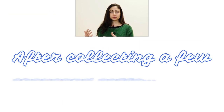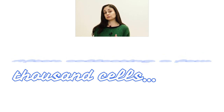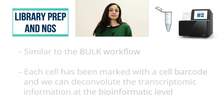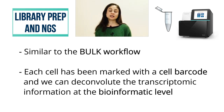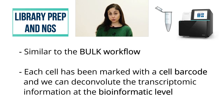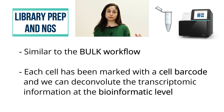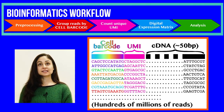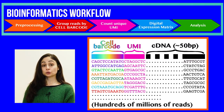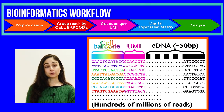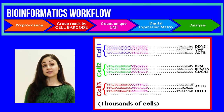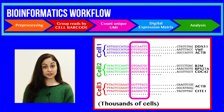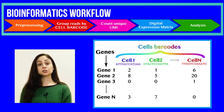After collecting the desired number of cells, we start with the proper library preparation workflow, which is very similar to standard bulk processing, because each cell has been marked at the beginning with a cell barcode. In this way, we can deconvolve the information of which cell contains a specific transcriptome at a bioinformatic level after sequencing. After sequencing, we end up with a collection of reads starting with a cell barcode, followed by the UMI and the true transcript information. We use the cell barcode to collapse reads by cell type, so each cell will have its specific transcriptome, and then we use the UMI information to exclude PCR duplicates.